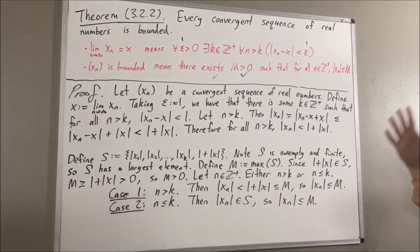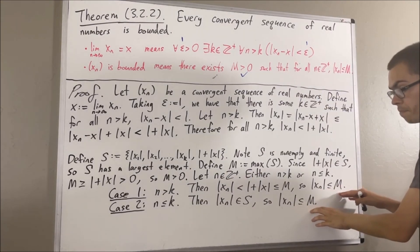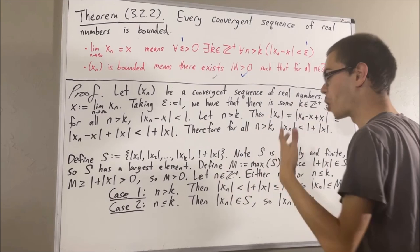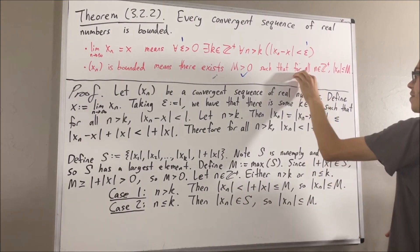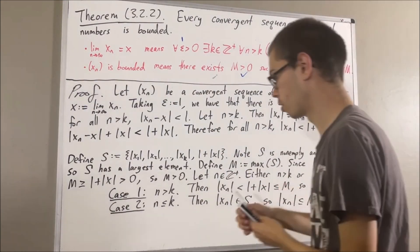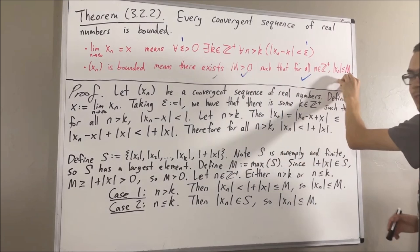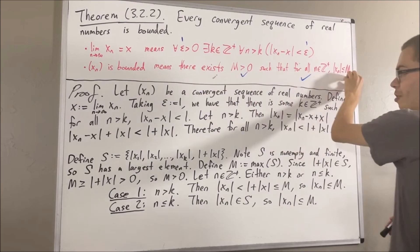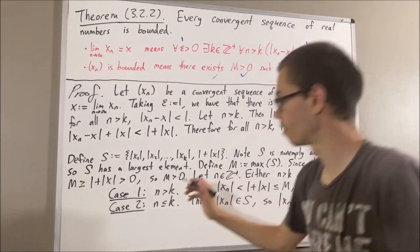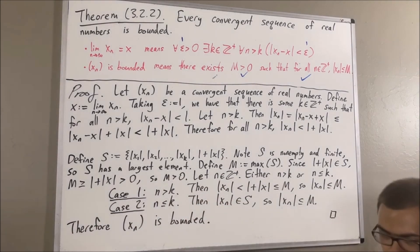Putting this together, for any positive integer n the absolute value of xn is less than or equal to M. Since n was arbitrary, we have shown: for all positive integers n, the absolute value of xn is less than or equal to M. So with this choice of capital M, we have proven the boundedness statement is true, which proves that our sequence is bounded. This completes the proof.